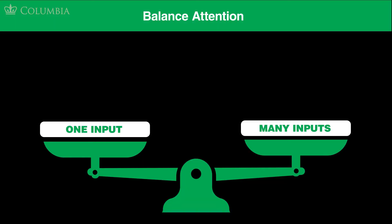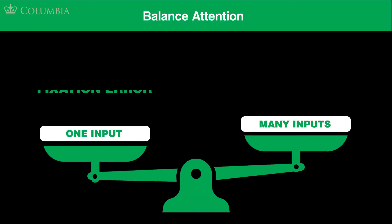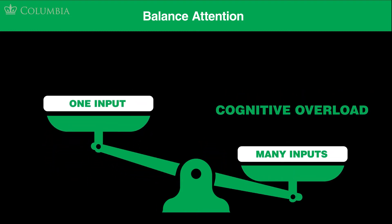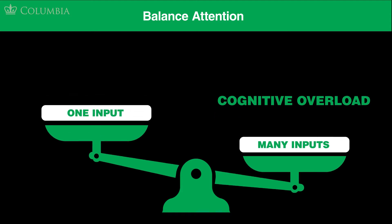It's helpful to think about attention as a resource that needs to be balanced by the demands of a crisis — a resource that can shift at a moment's notice. We may shift our attention to one particular detail and consequently ignore other relevant parts of a crisis, predisposing ourselves to what's called a fixation error. On the other hand, we may focus on many inputs or stimuli and risk cognitive overload. Attention is a limited resource that should be balanced.